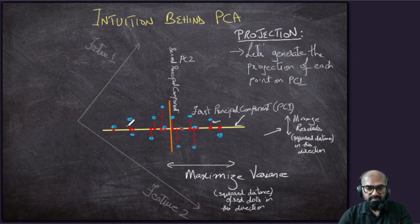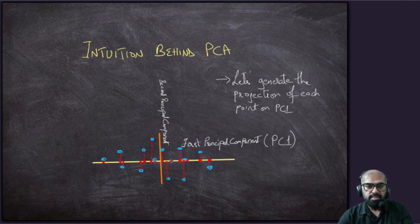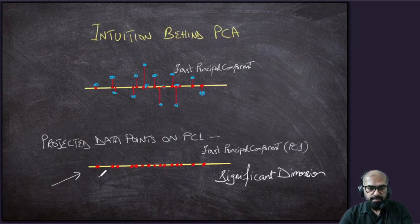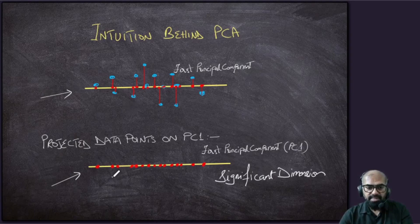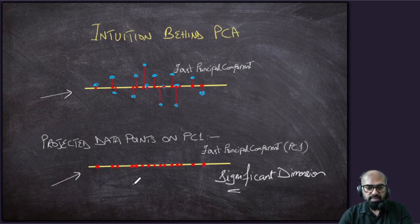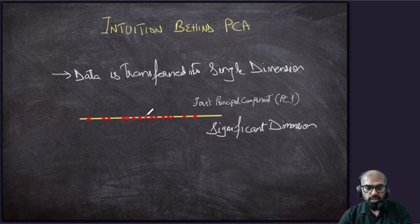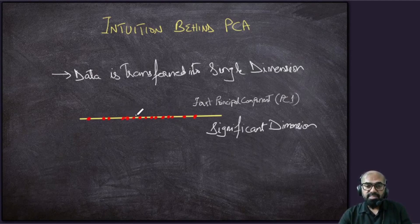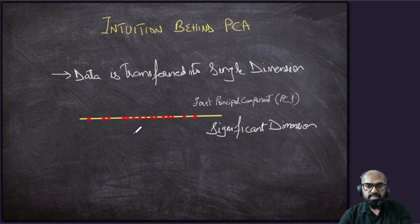So we transformed the data and projected all points onto the first principal component. What we end up with is the projected data points on PC1. Previously we had two dimensions, but after this projection we have a single dimension — all the points are on a straight line. This is the intuition behind how principal components are calculated and what's going on behind the scenes. Of course we'll cover the math, but this is how the components come into play.